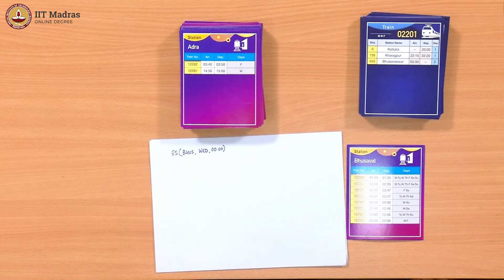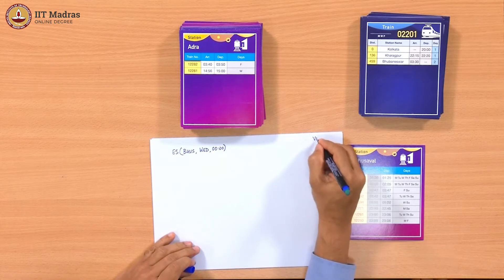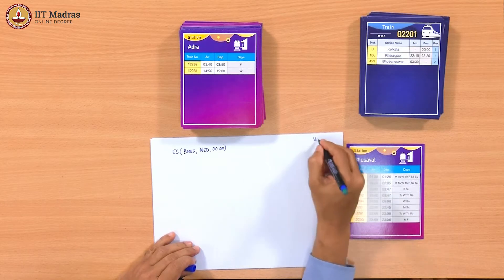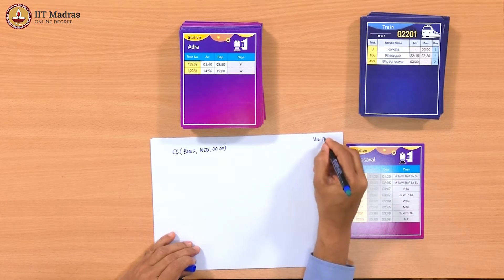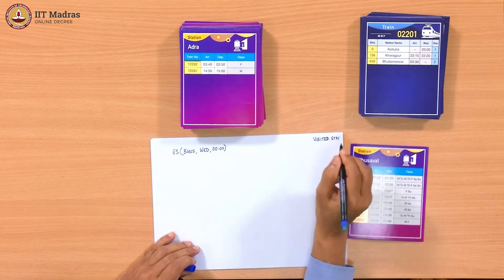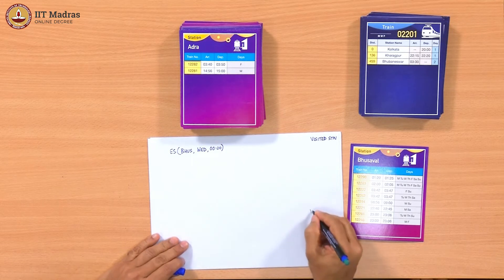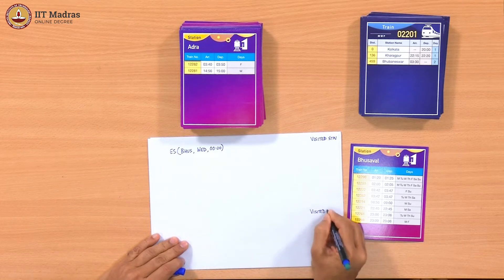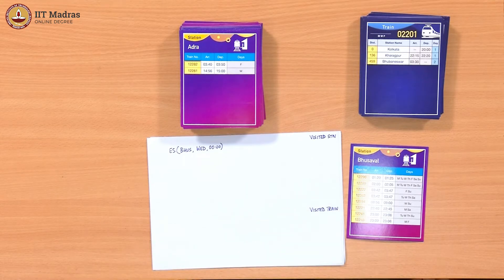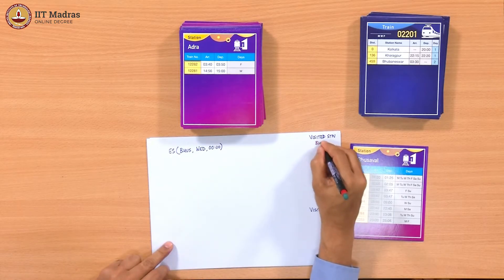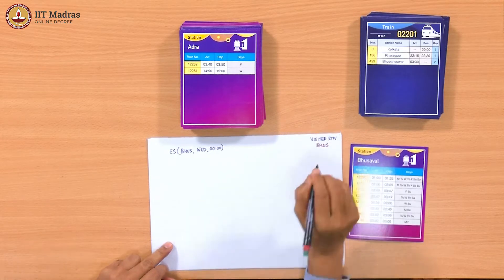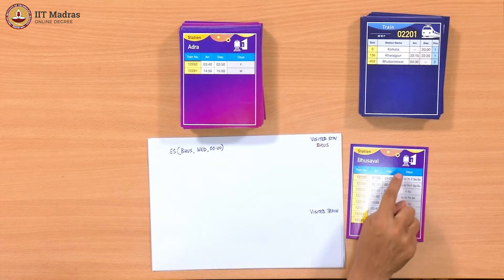So first we will have two visited lists — visited trains and visited stations. We can call it visited. Let us start here. The first thing we do is mark Busawal as seen. Now we pick up the first train on Wednesday which leaves Busawal and say we have to explore that — train 12290. So we call E-T 12290, departure time 1:25 on Wednesday.